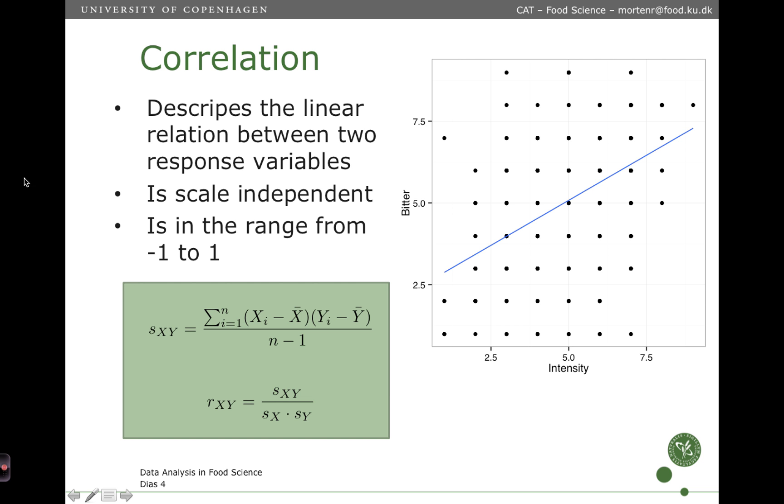It is in the range from minus one to one. The formula here, the upper one, is the covariance and the lower one is the correlation coefficient, where we take the covariance and divide by the standard deviation of the two response variables.